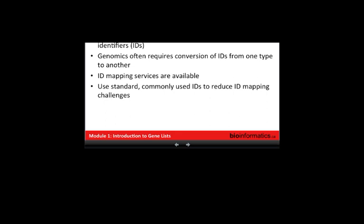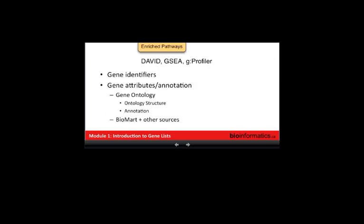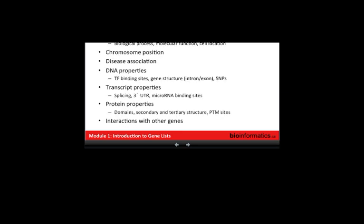That was a quick introduction to genes and identifiers, and some caveats to be aware of when working with large gene lists. Next I'm going to talk about gene attributes — pathways or functions of genes — which is the second thing used for pathway enrichment analysis. There's actually a huge amount of information about gene function available in databases: information about the function of the gene, chromosome position, disease association, transcription factors that might regulate it, protein properties, protein domains with known functions, and interactions with other genes and proteins.